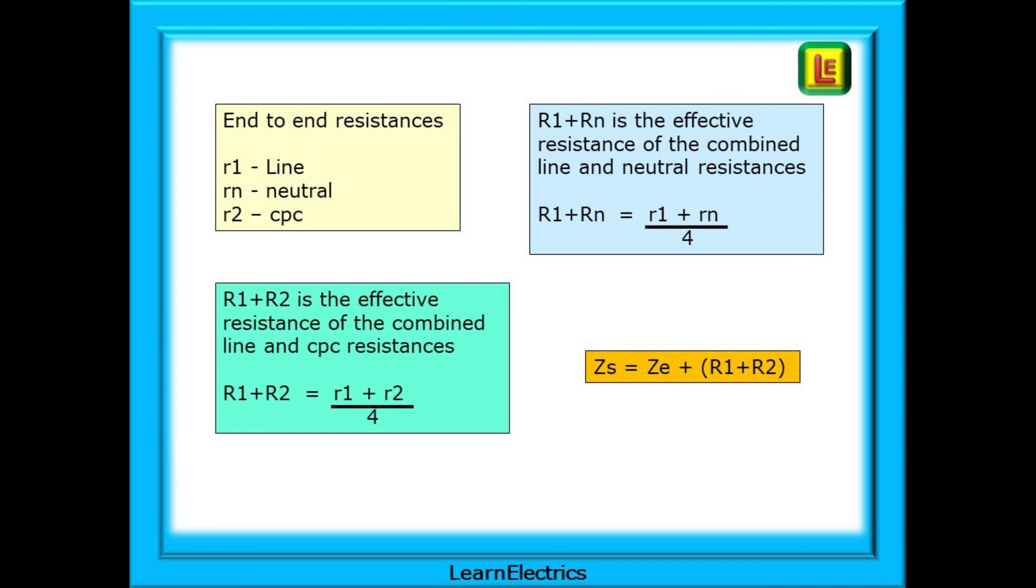The best way to learn these is practice over and over again, and then some more. Make up some numbers for little R1, Rn, and R2, and do the calculations for big R1 plus R2, and big R1 plus Rn. Practice makes perfect, and perfect impresses the assessor.